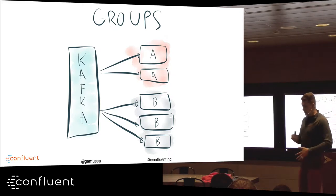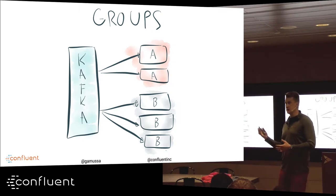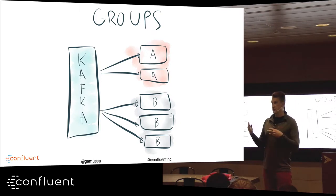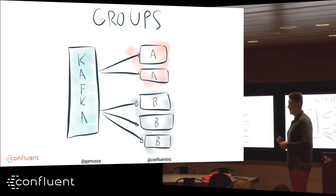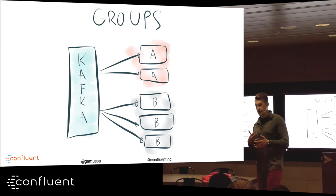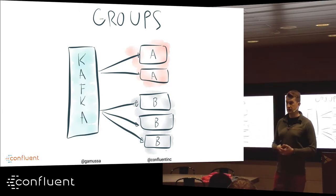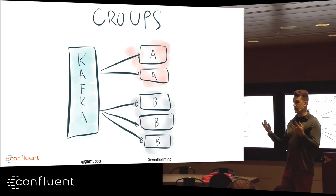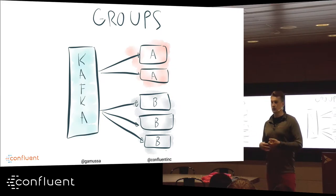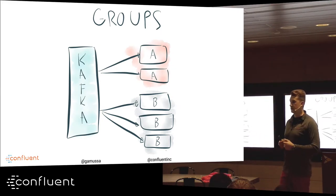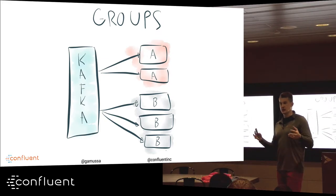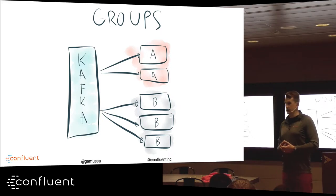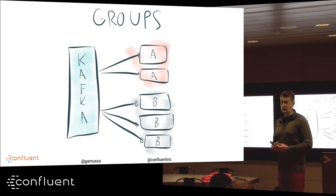People might find Kafka similar to a messaging system — topics, queues, reading and writing messages. But there's an interesting concept built into Kafka's consumers called consumer groups. The difference from traditional messaging systems is that when you have independent consumers, they each receive their own copy of the data if it's a topic, or exclusive messages if it's a queue. But how do you scale reads in a scalable fashion?